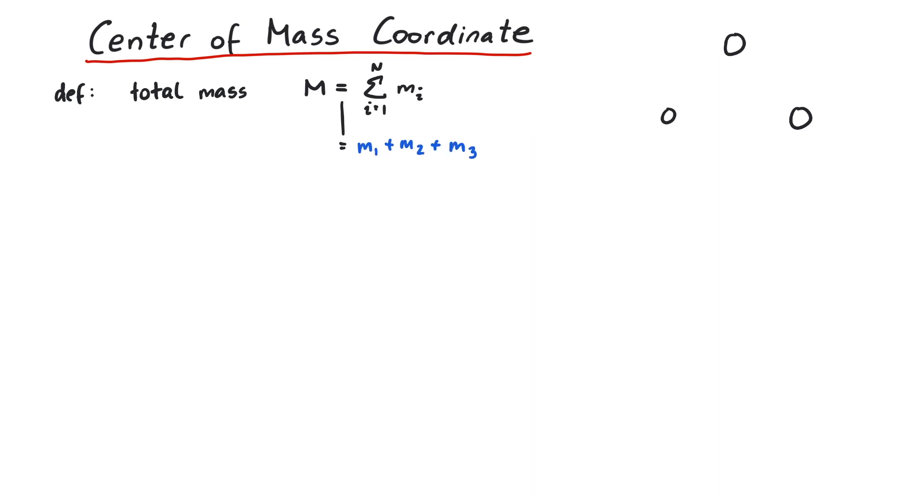Now we can define the most important quantity of this video, the center of mass coordinate. In the denominator, you can recognize the total mass of the system, which means we can also write it like this.